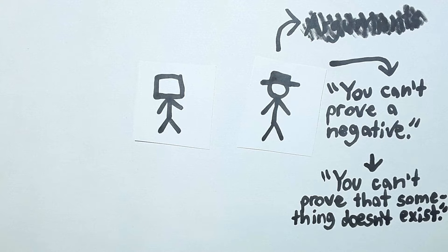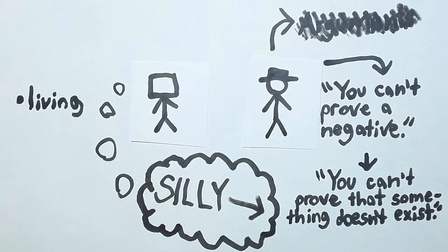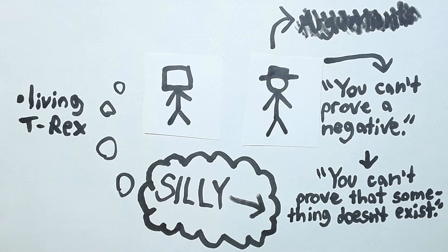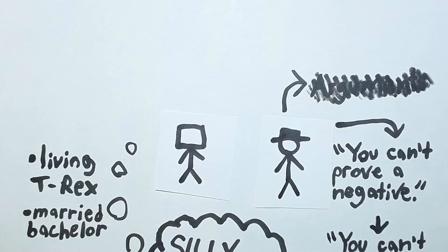But I think that claiming you can never prove a negative is very silly. People have pointed out that surely we can prove that there are no living T-Rexes, or that there are no married bachelors. But I also thought of a somewhat humorous example that shows that this claim is self-refutable.